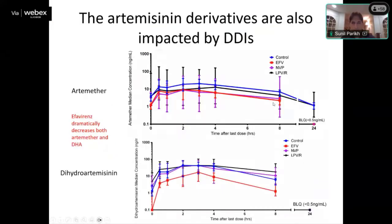Not only is the partner drug impacted by concomitant antiretrovirals, but the artemisinin component is also adversely affected. Those on efavirenz and nevirapine — historically the most widely used HIV drugs in Africa — had significantly lower exposure to the artemisinin component over time compared to controls.